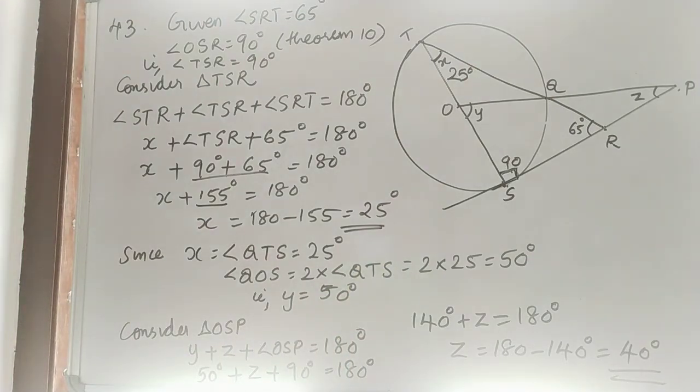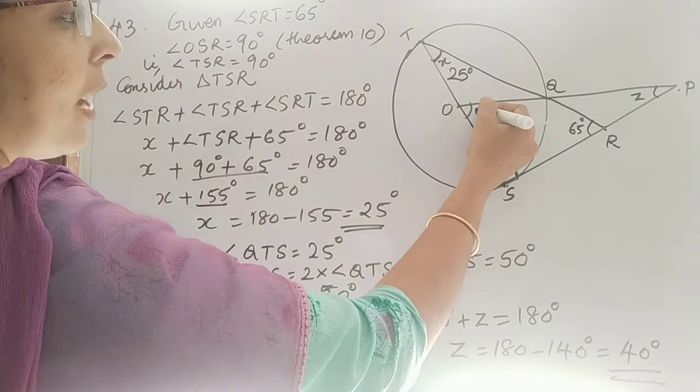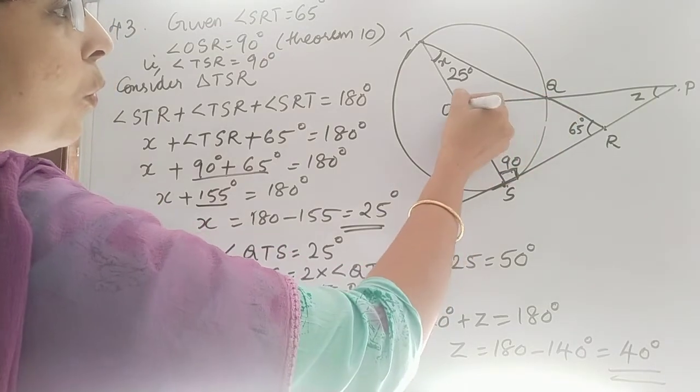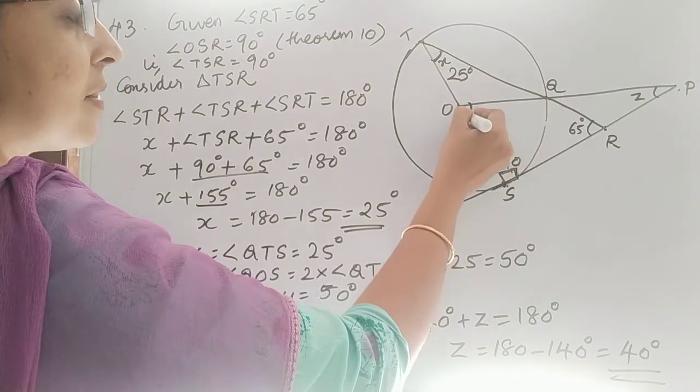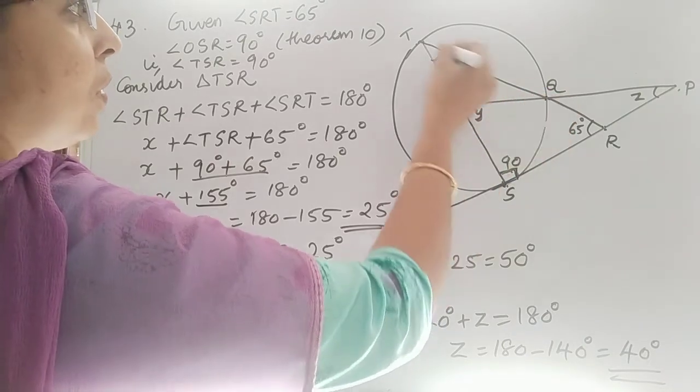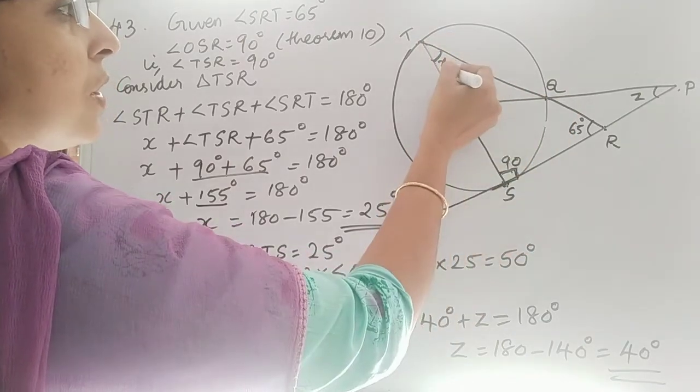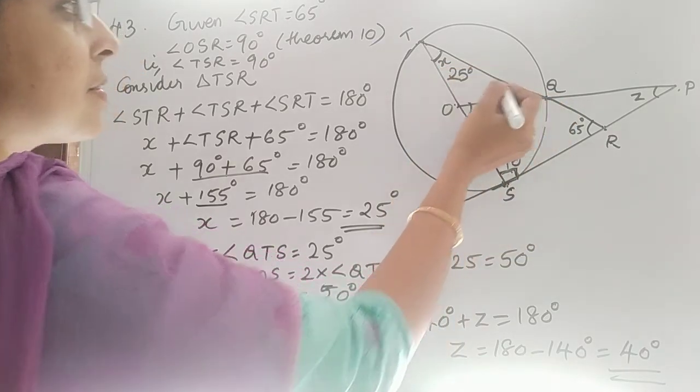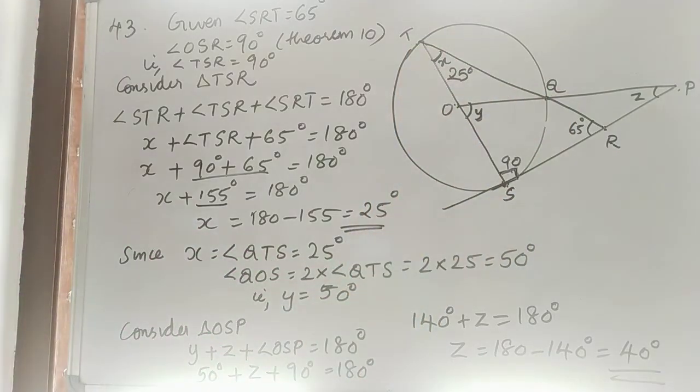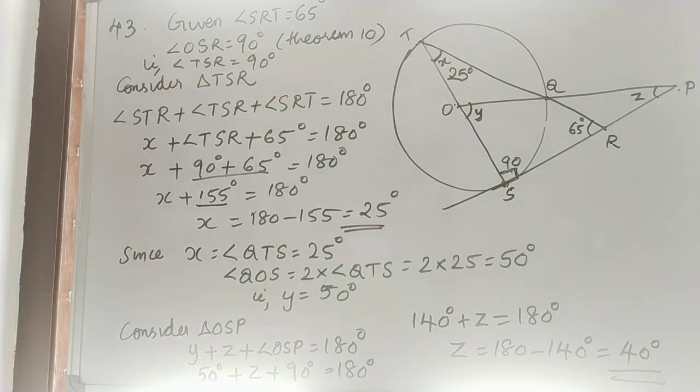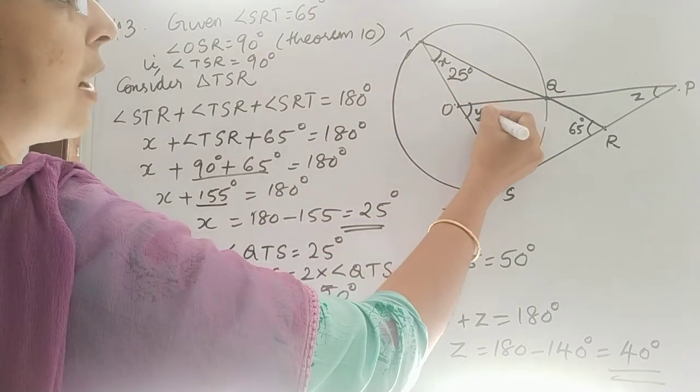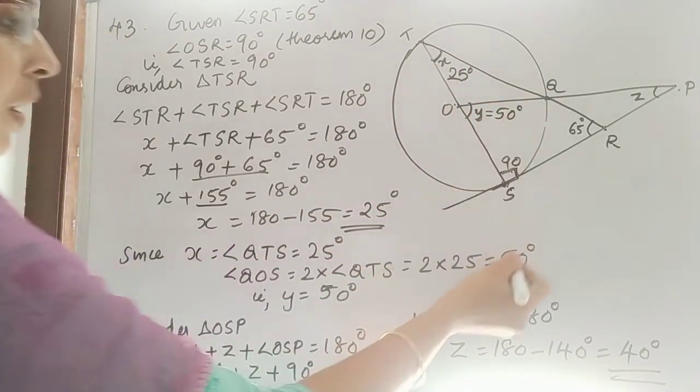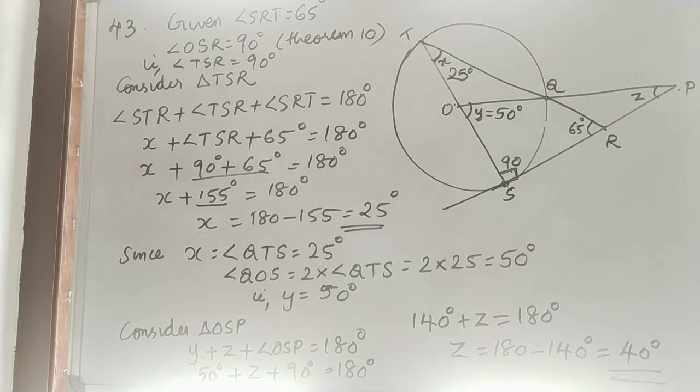Now look at Y. Y is angle QOS. Since O is the center of the circle and angle QTS is 25 degrees, then angle QOS will be twice angle QTS. So Y will be 2 times 25. So this angle will be 50 degrees. Y is equal to 50 degrees.